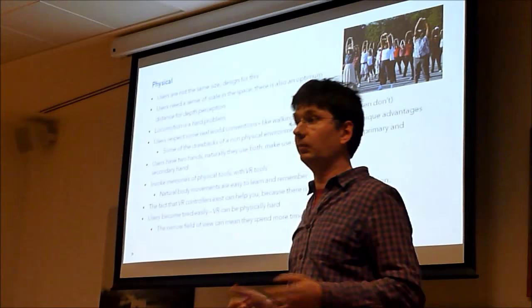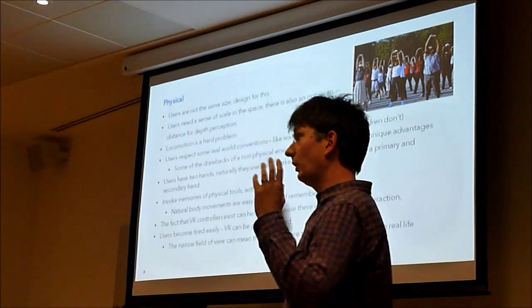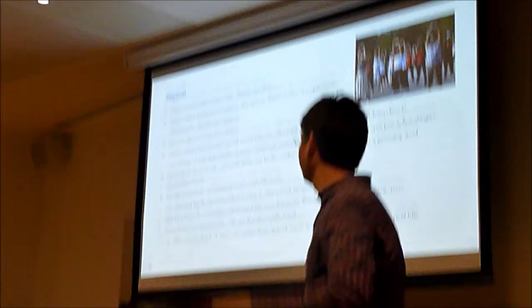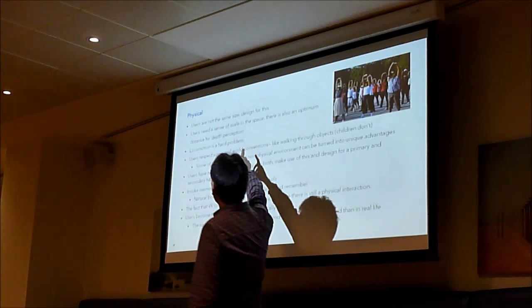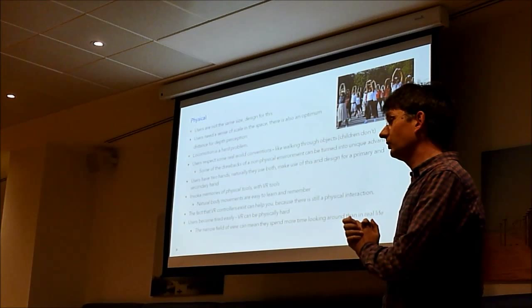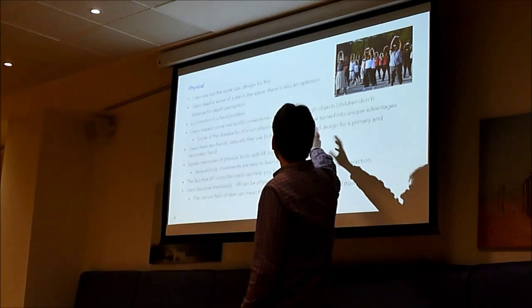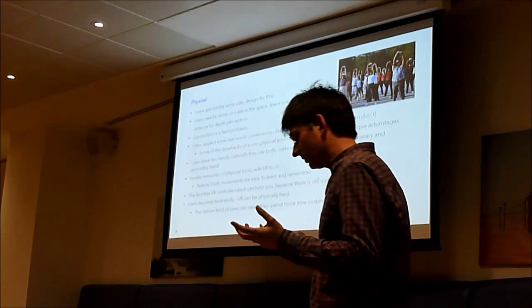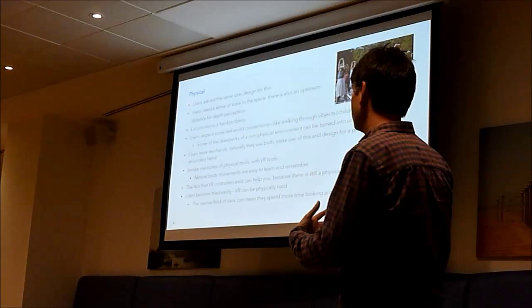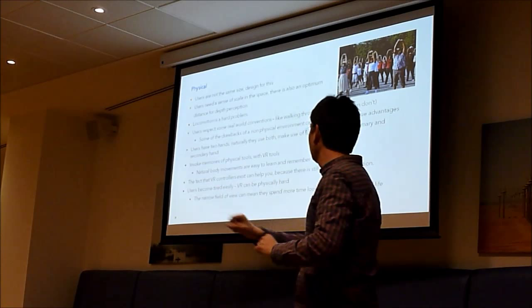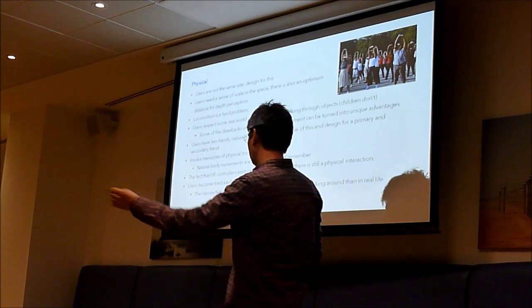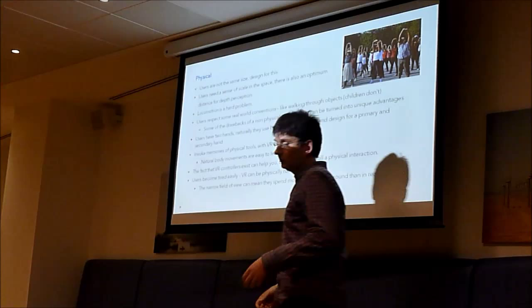Locomotion is a very hard problem. Moving around in first-person shooter games, you run far faster than you ever would in real life. When you do that in virtual reality, your brain goes 'what? This isn't real. I'm not really running that fast, and you can't run that fast bumping through a wall.' Users respect some real conventions. Adults don't like walking through virtual walls. They don't do it, they stop. Children apparently barrage their way through as though it doesn't exist. Some drawbacks to a non-physical environment can turn into advantages. Going through that wall - adults can clip through a car and see what's inside, turning a disadvantage into an advantage.